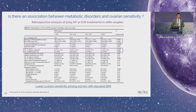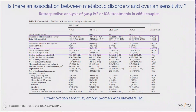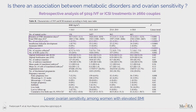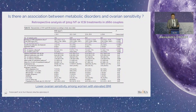Thinking about environmental factors, we should also consider habits and lifestyle factors, because metabolic factors could also be related with the hyper-response profile. In a retrospective analysis of more than 5,000 cycles, stratifying patients according to BMI, we realize that when the BMI is very high, we have a reduced number of eggs compared with normal BMI and we need an increased amount of medication. So even metabolic factors — which could be corrected by modifying our lifestyle — could impact on ovarian response.